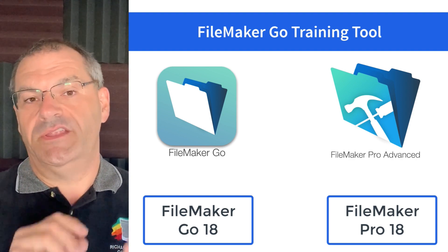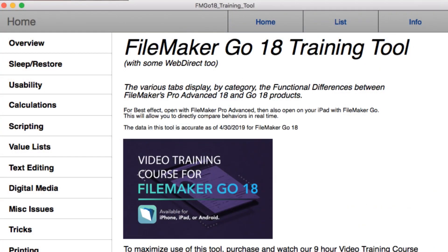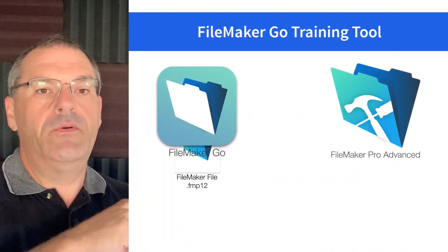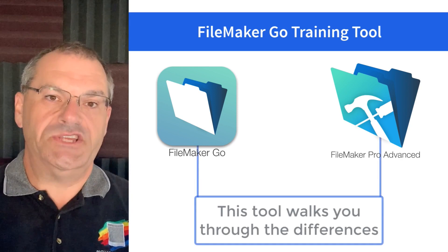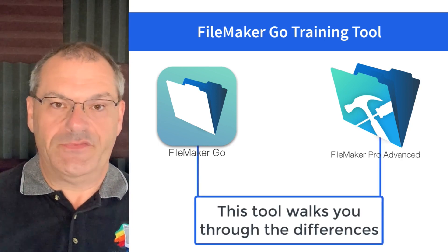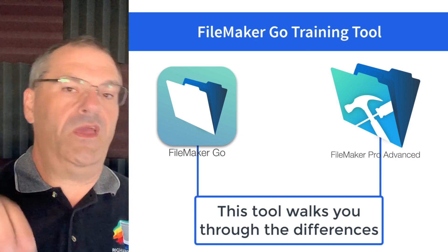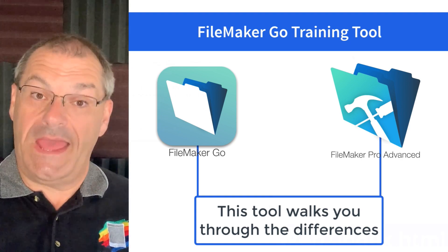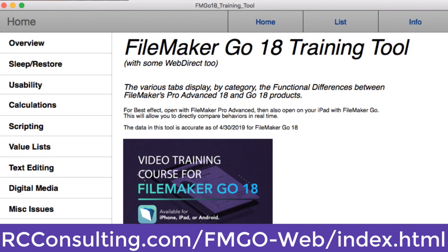This is a tool to help show you the difference in behavior between FileMaker Pro and FileMaker Go. If you build a solution in Pro, take the identical FileMaker file and put it on Go, and compare the two — this tool walks you through that. There are behavioral differences between the operating systems: one is mouse-based, one is touch-based, and even though they come from the same company, they behave a little differently. It's important to understand those differences, and this tool helps you become a great mobile application developer using the FileMaker platform. Totally free and totally unlocked.